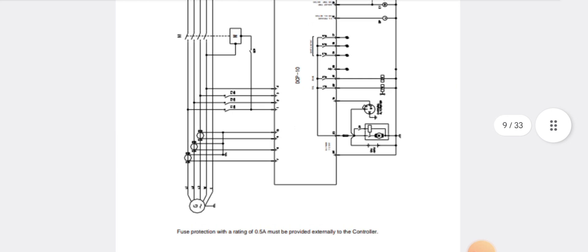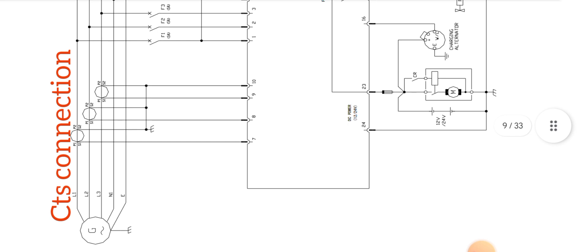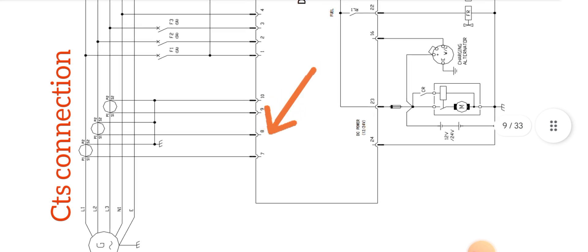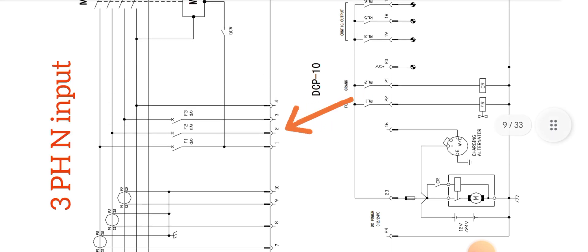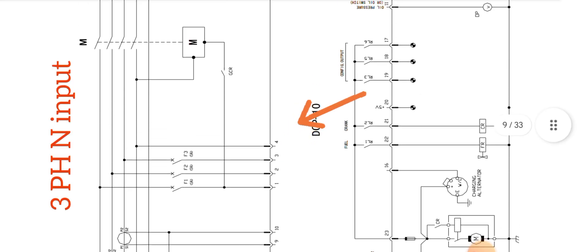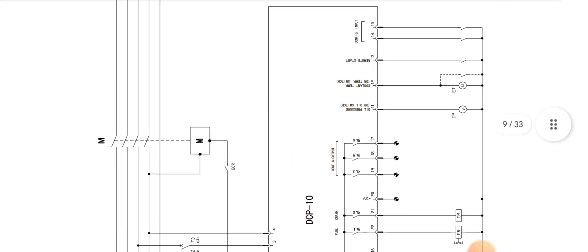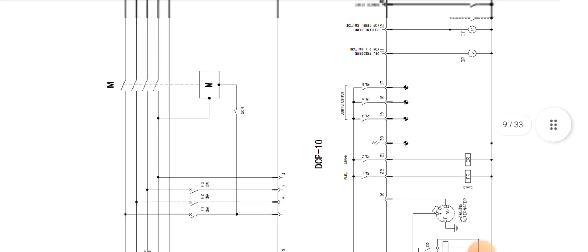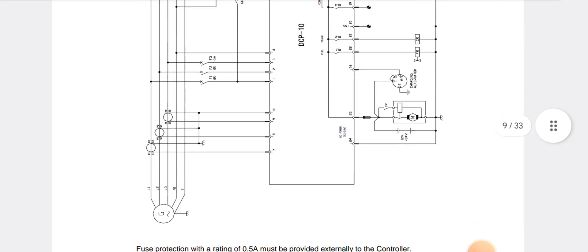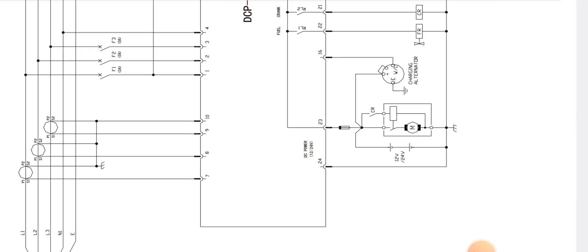This is the block diagram of the complete controller. As you can see, pins 7, 8, and 9 are coming from the current transformers, and pins 1, 2, 3, and 4 are coming from the three phases and one neutral. We also have the GCR — generator circuit contactors, the main contactor.